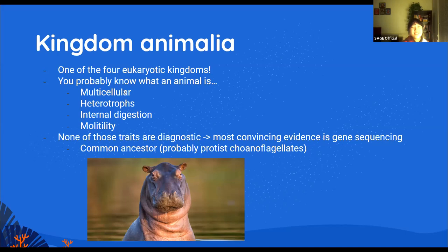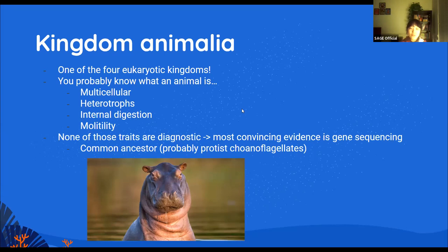You probably already know what an animal is, but just to break down some of the characteristics that most animals share: they are multicellular, meaning they have a bunch of different cells working together to form the organism. They are heterotrophs, which means they can't make their own food the way plants and some protists can. They have internal digestion, meaning a digestive system within them. And most of them have motility, meaning they can move — although this is not true for animals like sponges or those that attach to surfaces.